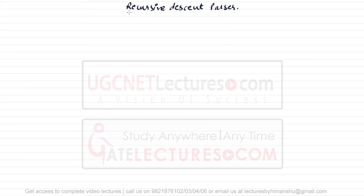We are going to discuss the recursive descent parser. In this parser, I'm going to explain some basic assumptions and accordingly explain how we parse through this parser. In this recursive descent parser, we use a recursive stack, or you can say we use the help of recursive programming to parse a given string or expression.